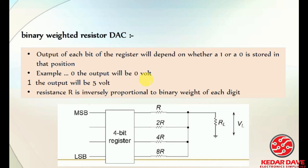Here you can see a 4-bit resistor DAC using binary-weighted resistors — R, 2R, 4R — where each resistor is double the previous one. This accounts for each bit state from 1 to the desired number of bits. When the input is 0 the output is 0V, and when the input is 1 the output is 5V.